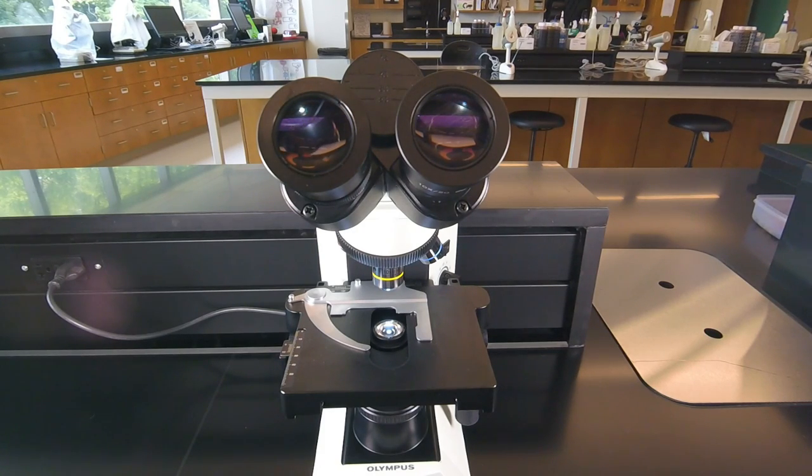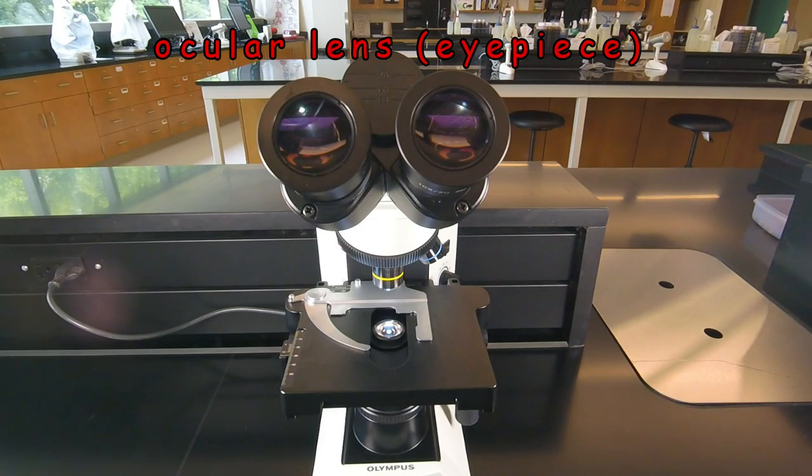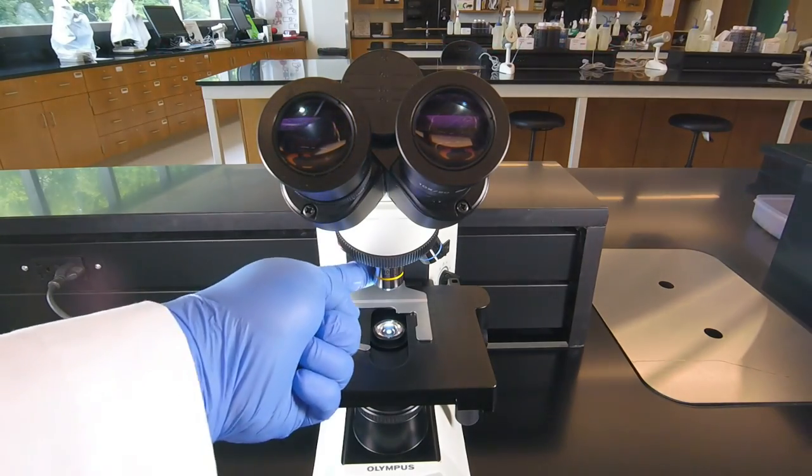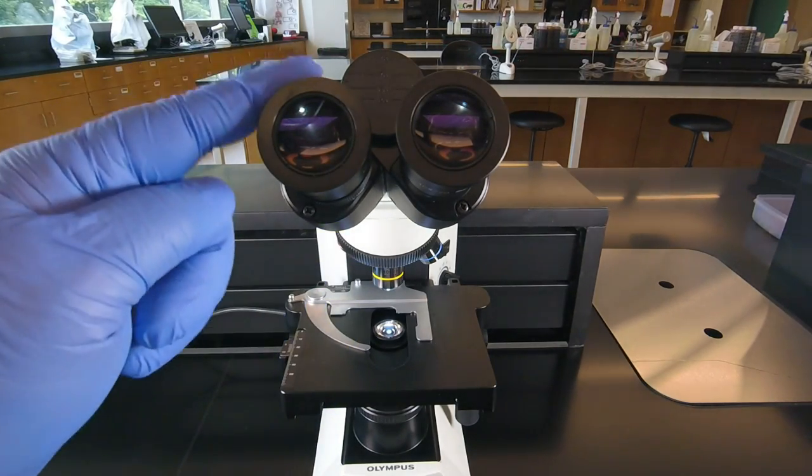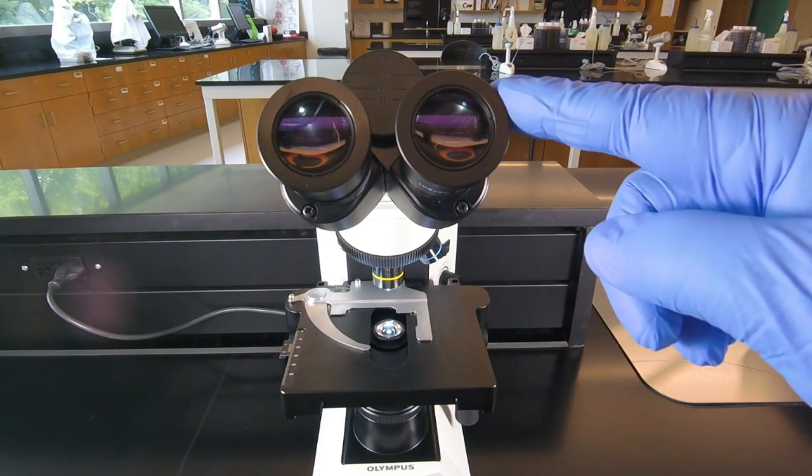Once we have the microscope turned on, we're ready to adjust the eyepieces. These are binocular microscopes, which means they have two oculars or eyepieces. Now we have to make sure that we have some lens clicked into place over the light source. So we'll see some light coming through here when we look through the eyepieces. You're going to want your eyes about three quarters of an inch away from the eyepiece.